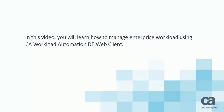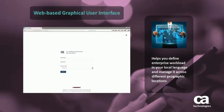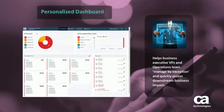In this video, you will learn how to manage enterprise workload using CA Workload Automation DE Web Client. CA Workload Automation DE Web Client is a web-based graphical user interface to define enterprise workload in your local language and manage it across different geographical locations. The web client includes a personalized dashboard that helps business executive VPs and operations teams manage by exception and quickly access downstream business impact.